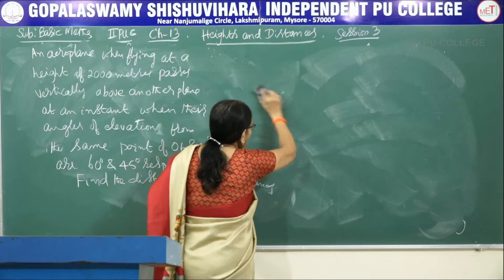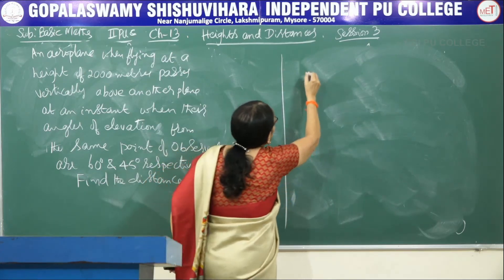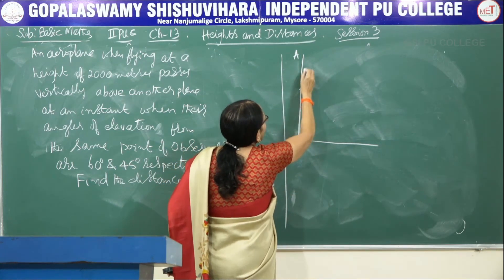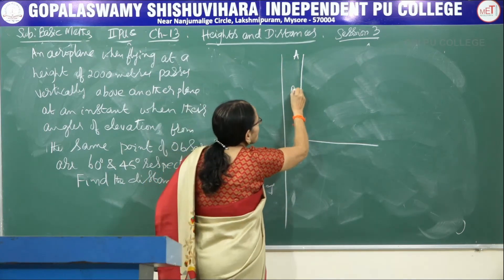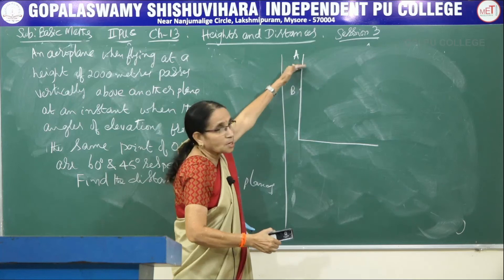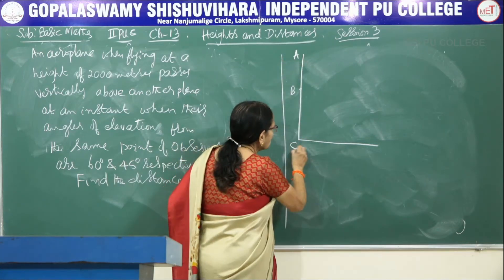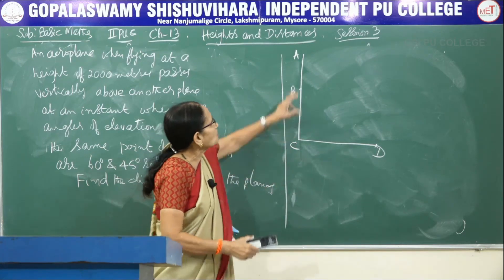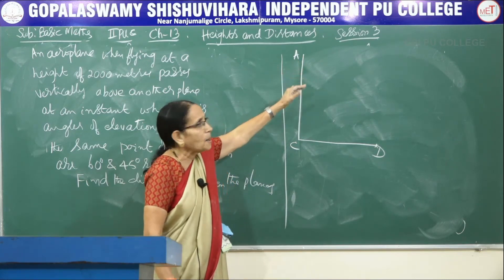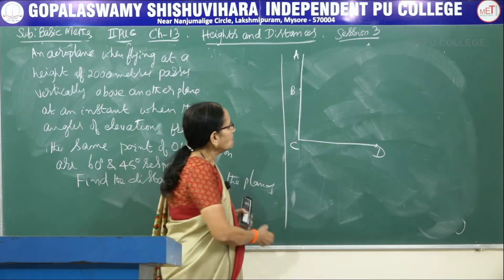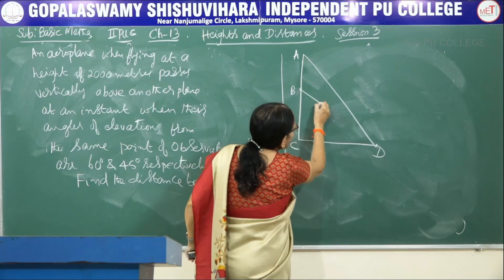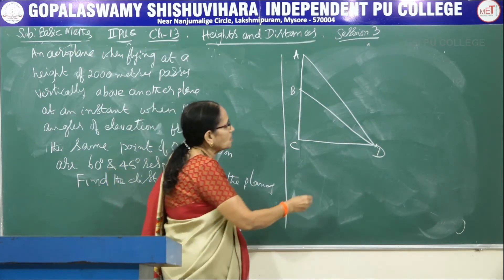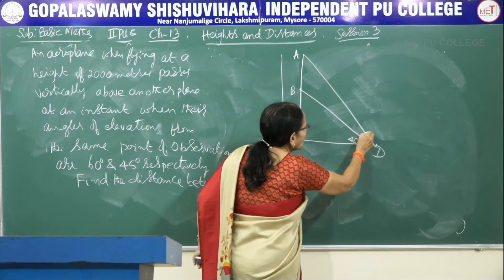Let us write the diagram. Let A be the position of the second plane and B be the position of the first plane — this is flying vertically above that one. C is the base and D is the point of observation on the ground. When this plane came exactly above B, both of them were observed from point D. Joining A to D and B to D, the angle of elevation to B is 45 degrees and to A is 60 degrees.